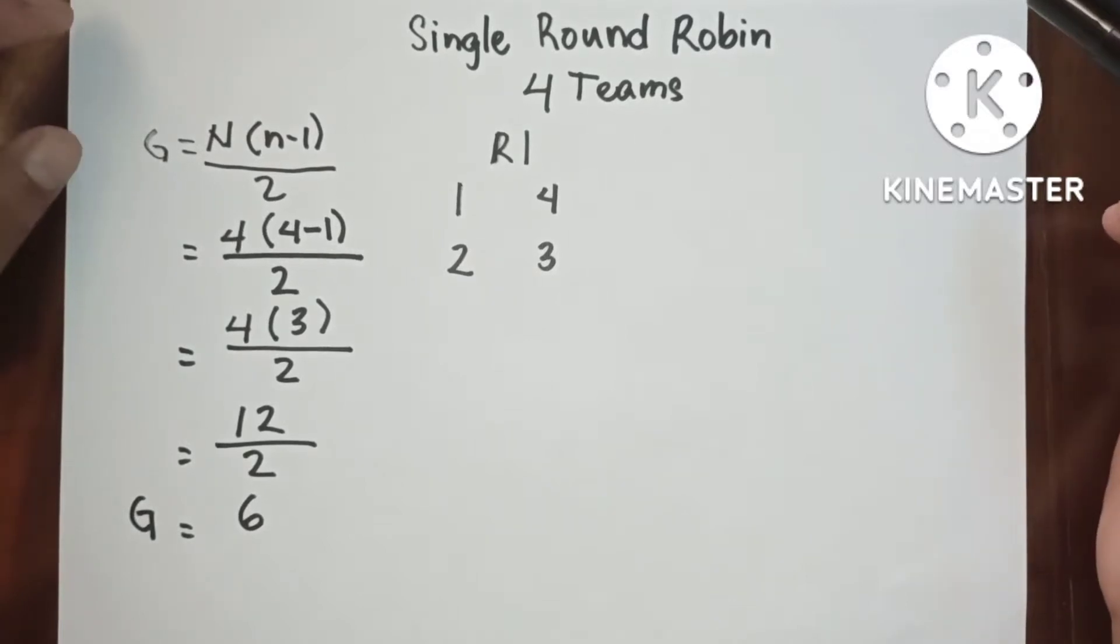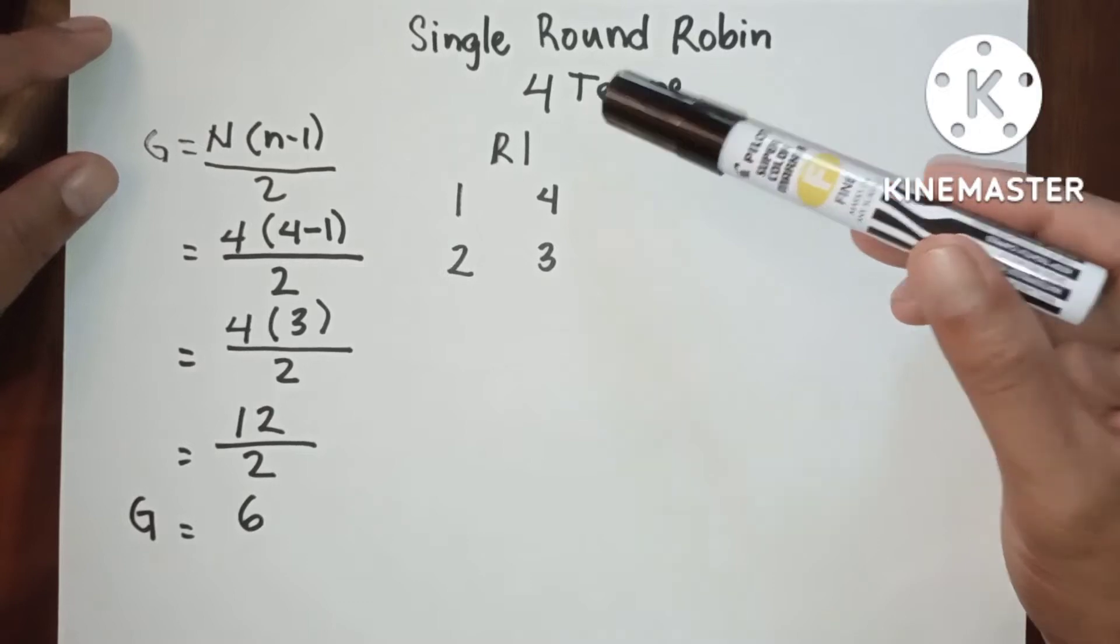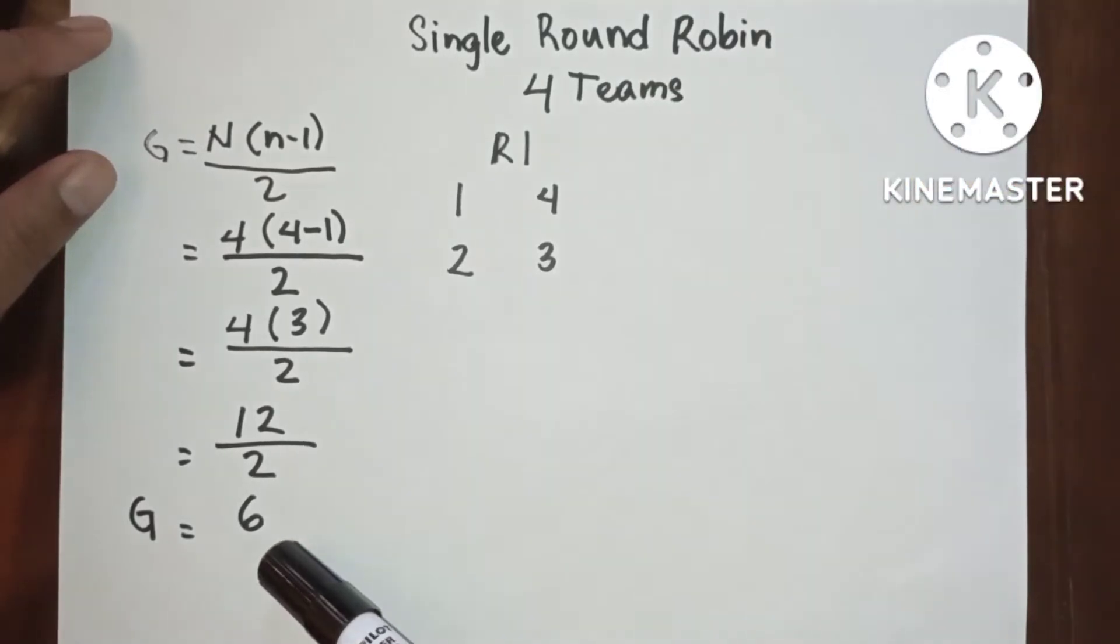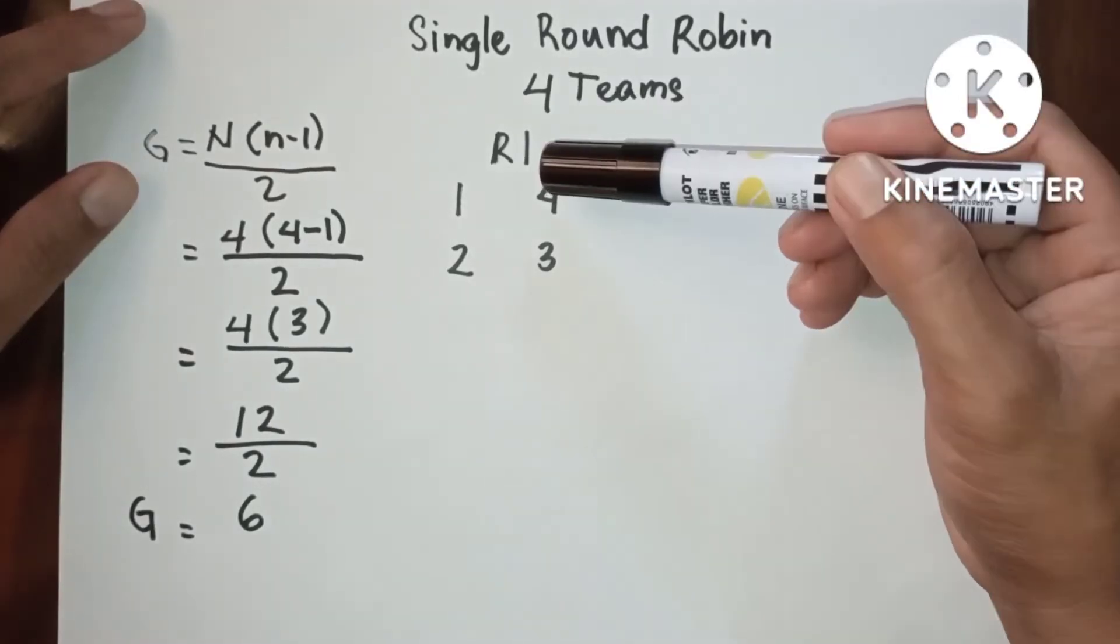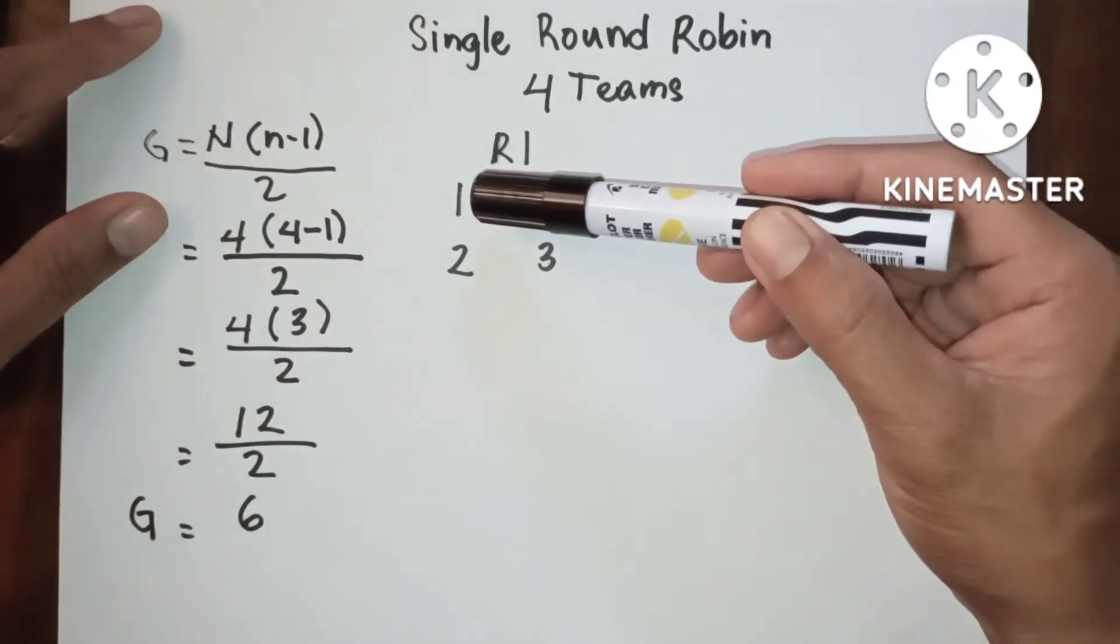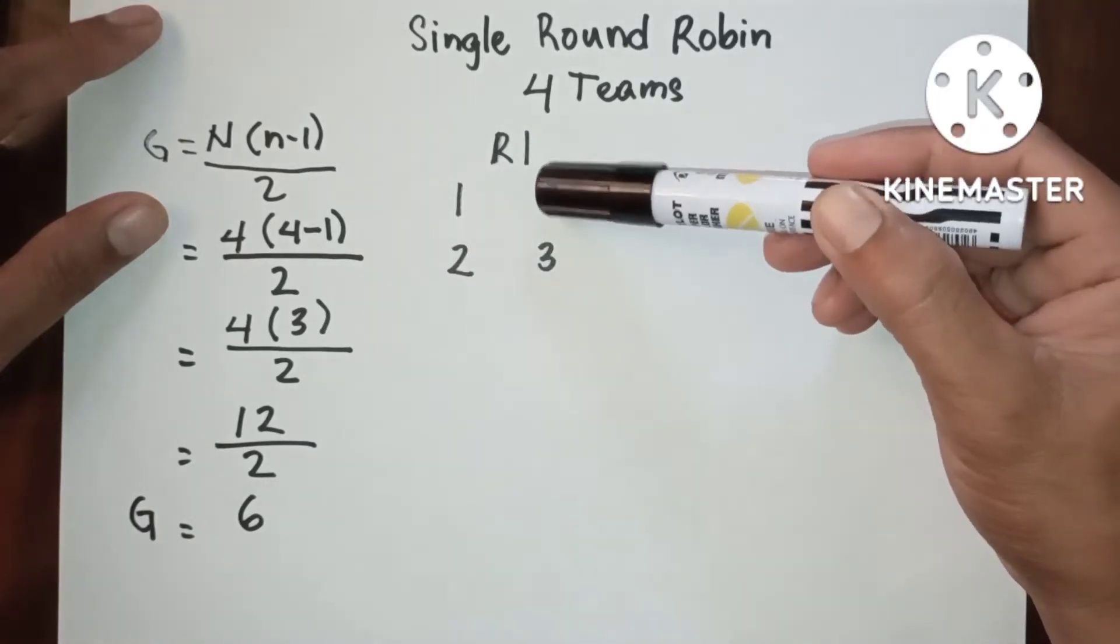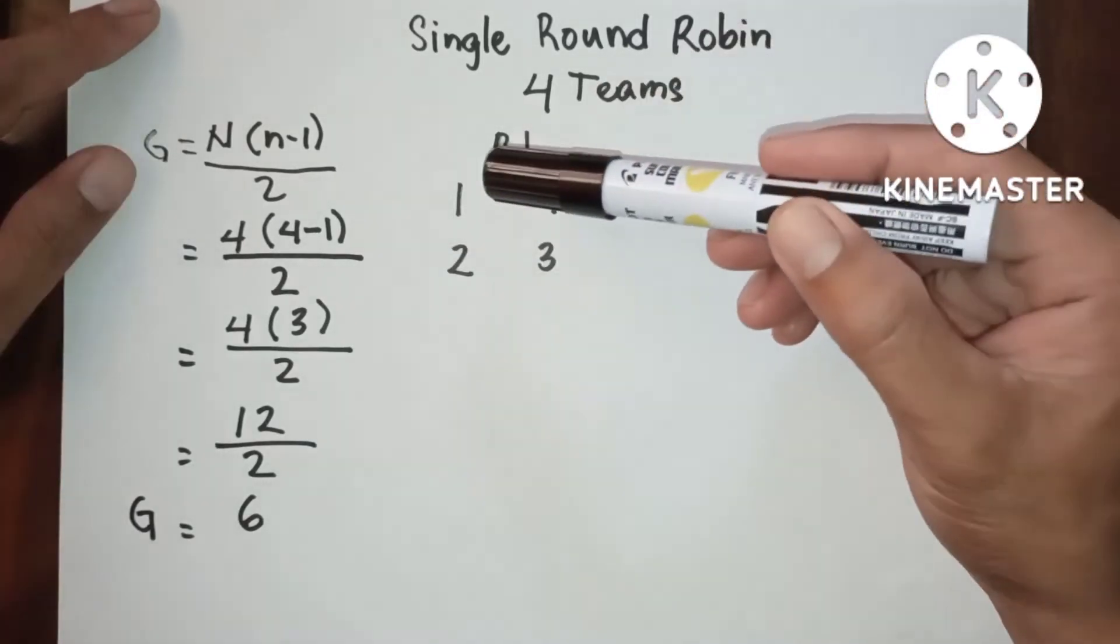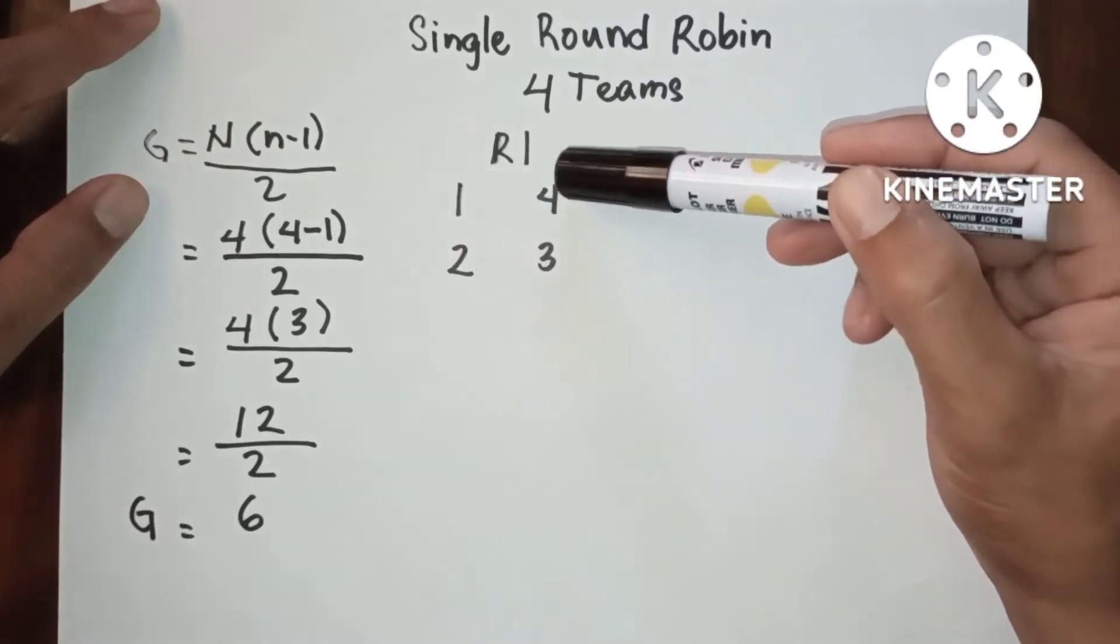Hello everyone, this is single round robin in four teams. In four teams we have six games. Now let's proceed to round one. Remember that when you are writing the number of entries, it must be written in two vertical columns, the first column and the second column, and it must be written counter-clockwise.